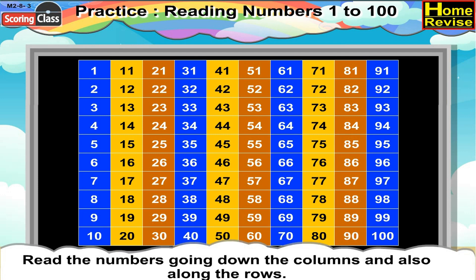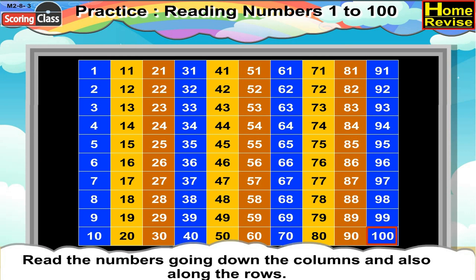Now, the last row begins with 10. 10 plus 10 is 20, which is the next number. And similarly, it follows as 30, 40, 50, 60, 70, 80, 90, 100.